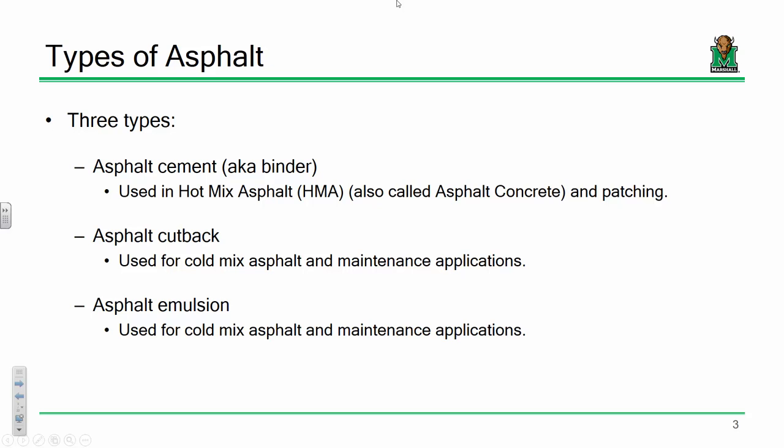Asphalt cement or binder is primarily used in hot mix asphalt, in hot applications. Cutback and emulsion are used in cold mixes — mostly for maintenance, patching, and applications like that. A little bit about asphalt cement and the binder: asphalt is a material that is viscoelastic. You know what elastic means — if you load it and let it go, it goes back to its original condition. At cold or low temperatures, asphalt is an elastic material; it's solid. But when you heat asphalt up it gets soupy and turns into a liquid.